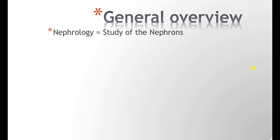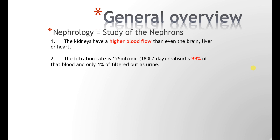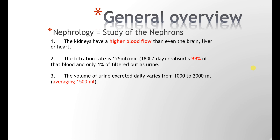Here's some trivia for you. The kidney has a higher blood flow than the brain, liver, and the heart. The main function of the kidney is to filter the blood, and it does so at a rate of 125 milliliters a minute, which amounts to approximately 180 liters a day. It reabsorbs 99% of that, and only 1% ends up as urine — approximately 1.5 liters, though this varies depending on how much you drink.